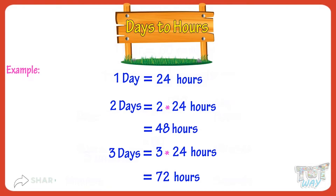So kids, you can convert days to hours by multiplying the number of days with 24.